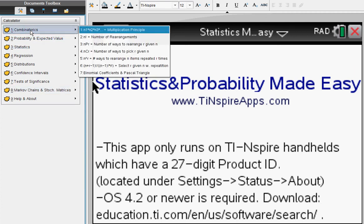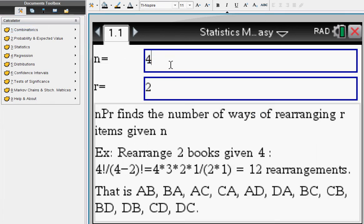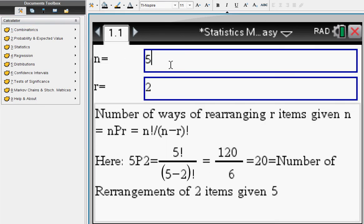Let's look at some features of the app. NPR, everybody knows nPr, the number of rearrangements. 5P2 is found by doing 5 factorial divided by 5 minus 2 factorial, which is computed here. You're going to get 20.